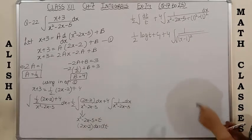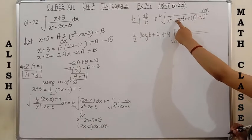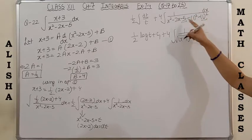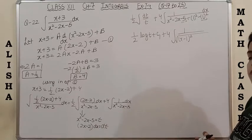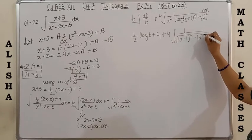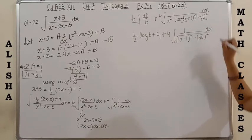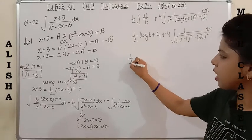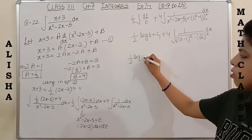Opening x minus 1 whole square gives x²+1-2x. The leftover constant term: -5 minus 1 is -6. Since 6 is not a perfect square it can be written as minus (√6)², giving the form 1 upon [(x-1)² - (√6)²] dx. Now replacing t back: t is x²-2x-5.